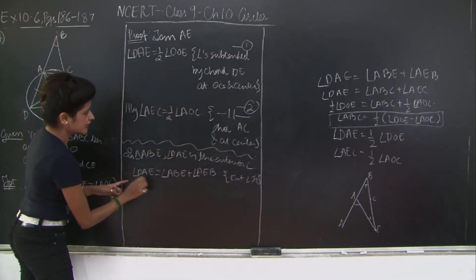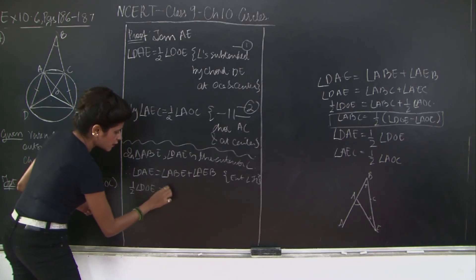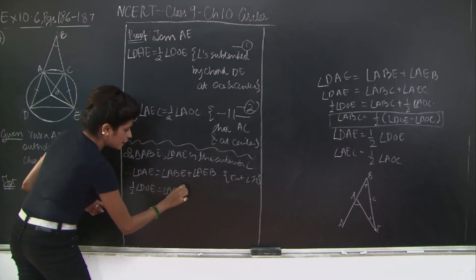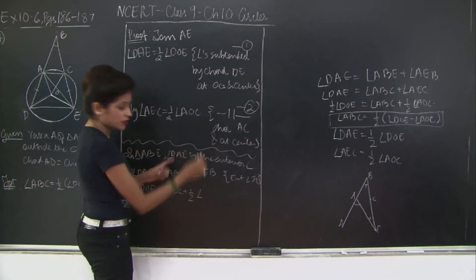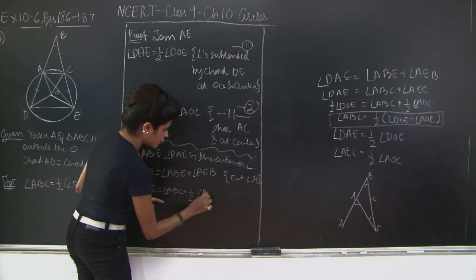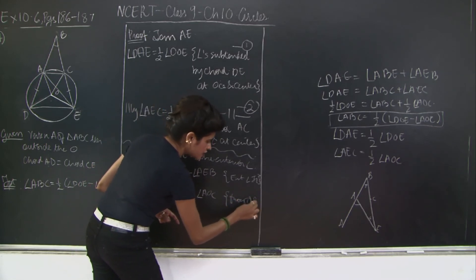So now DAE is what? DAE is half DOE. So half angle DOE is equal to angle ABC plus half angle AOC, because AEC is half angle AOC. And I will say from 1 and 2.